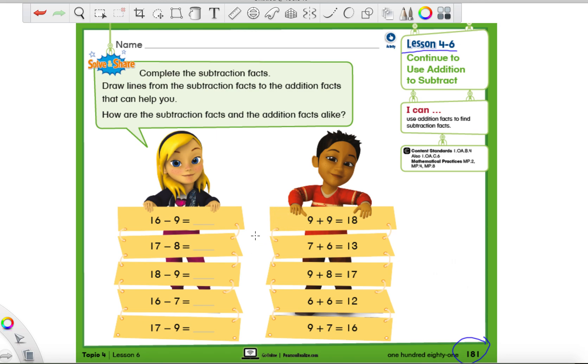All right, so what we have to do is look at the first number sentence. We have 16 minus 9, and then we're going to look down this whole column of addition facts that will give us the answer we need, and we're just going to draw a line to it. I mean, how easy and fun is that? I used to love stuff like this. So I'm going to give you guys a little hint about the most efficient way to do this, and by efficient, I mean you will not waste all your time doing this one activity.